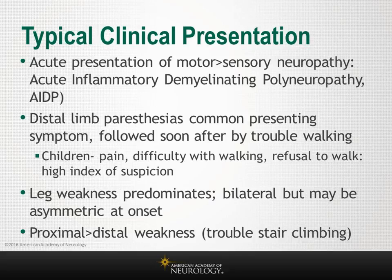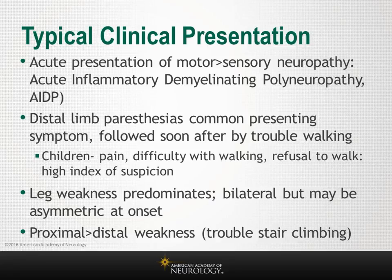The most common initial symptom of Guillain-Barré is paresthesia of the distal extremities; however, patients have little objective sensory loss at this stage. Severe radicular back pain or neuropathic pain affects most cases across the whole spectrum of Guillain-Barré and its variants. Diagnosis in children can be difficult and requires a high index of suspicion, as children may just present with pain, difficulty walking, or refusal to walk.